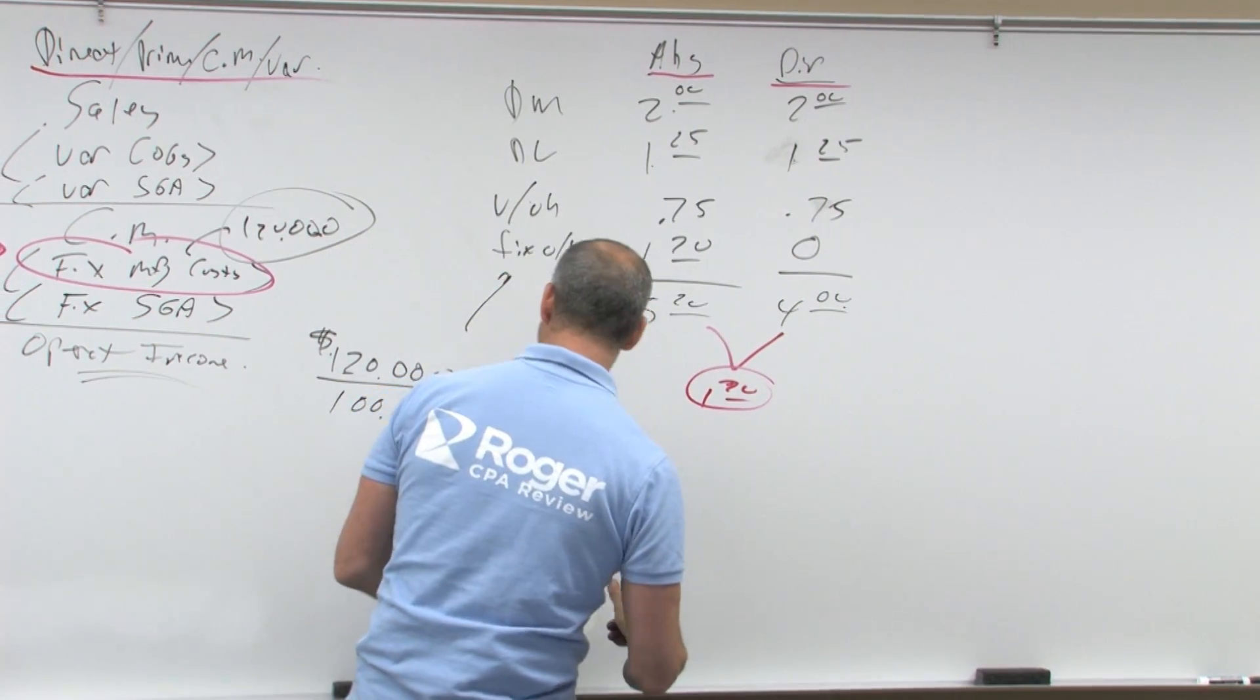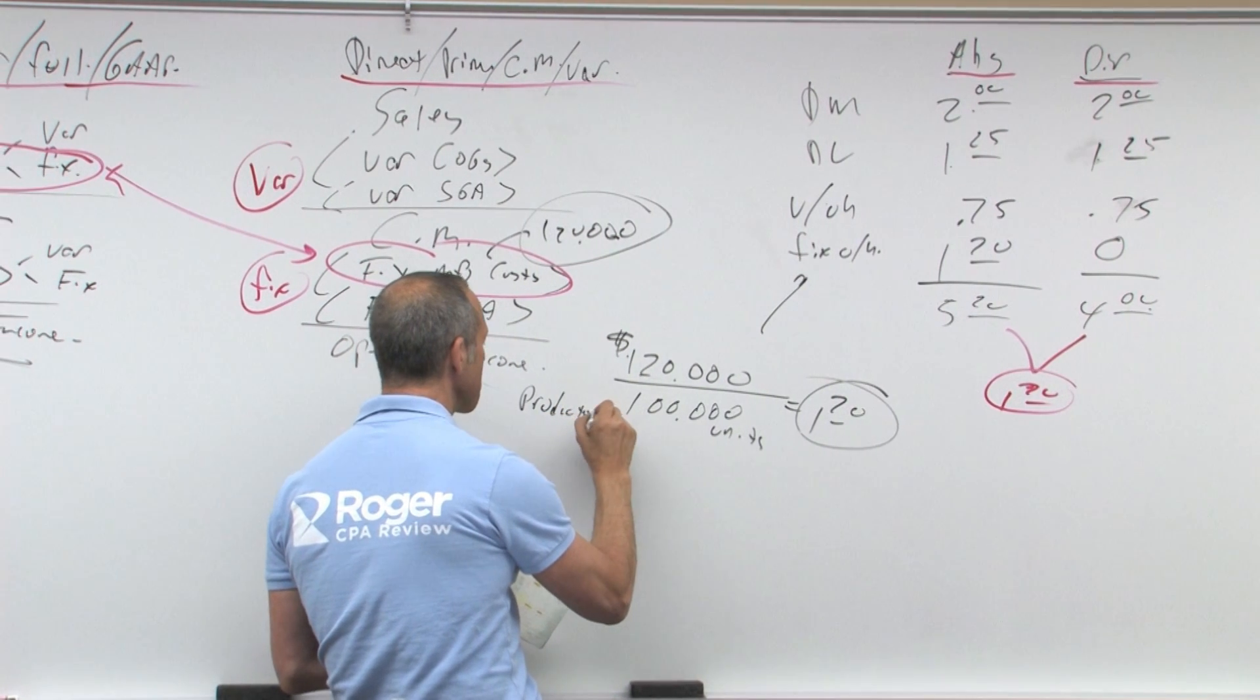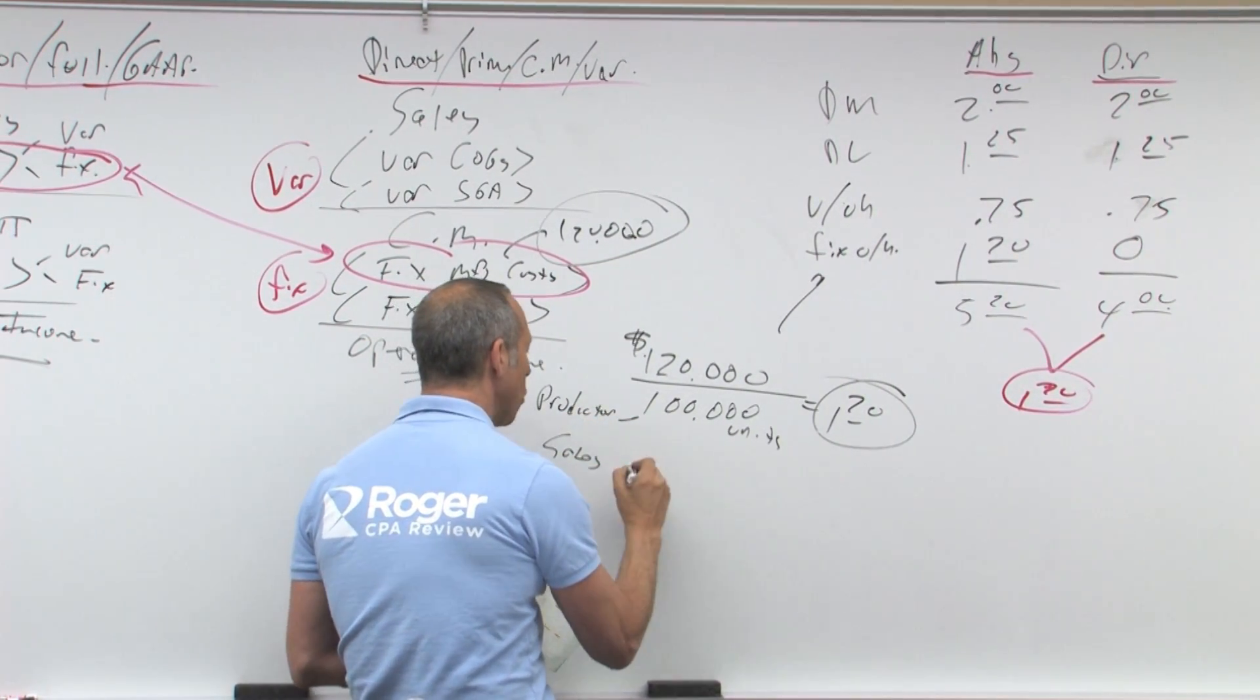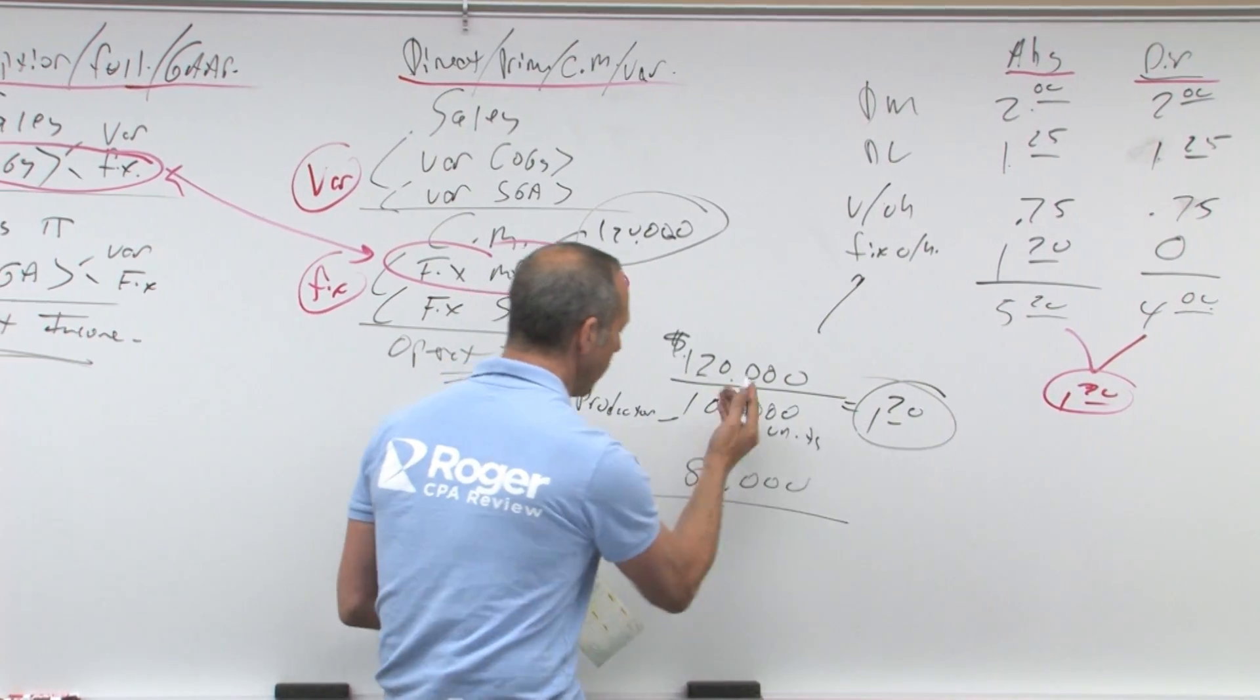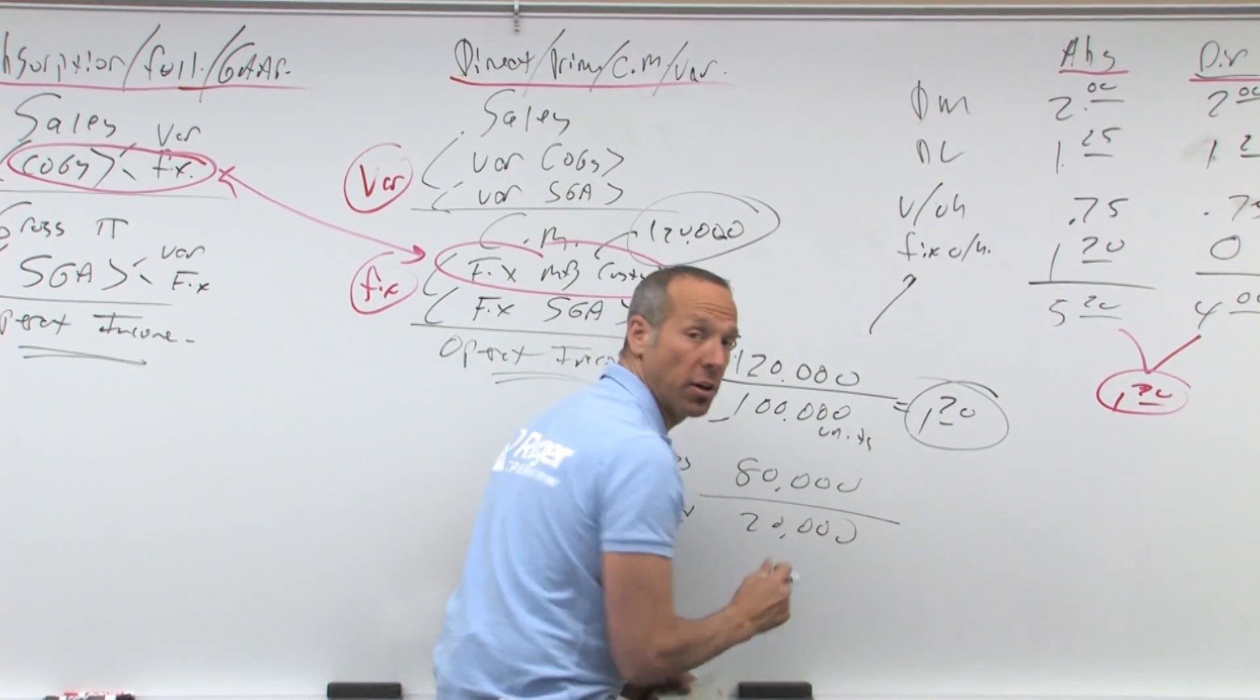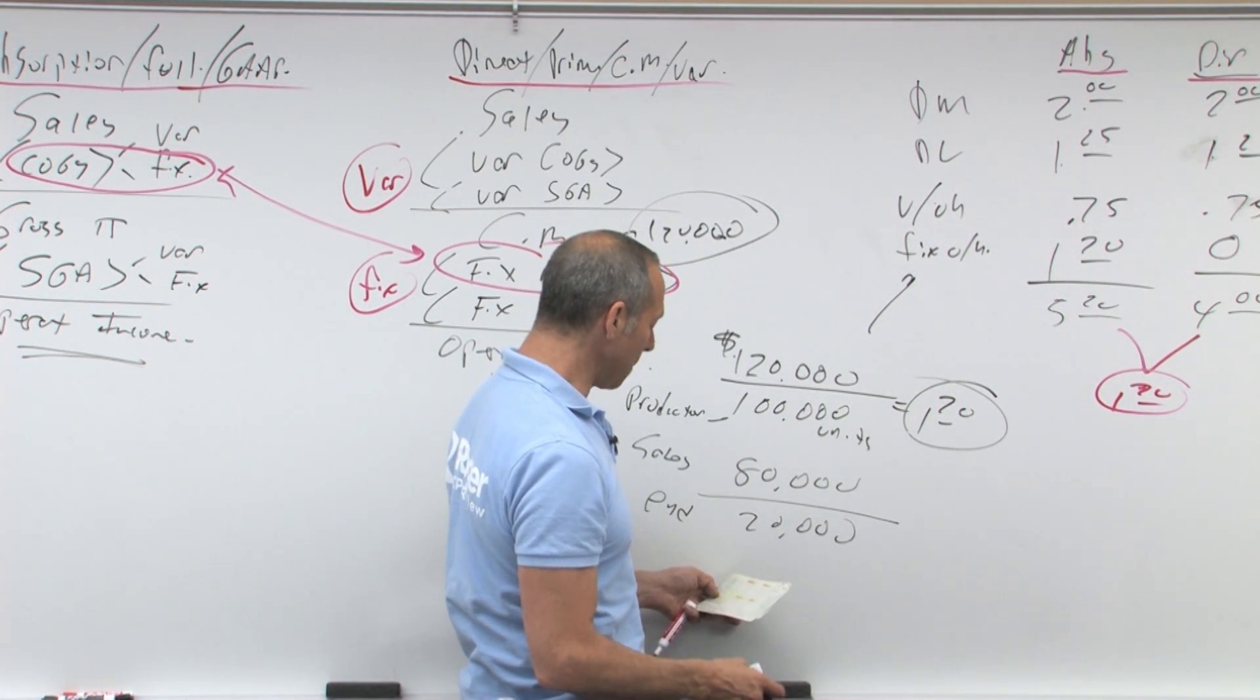Let's say for example, that my production was 100,000 units, but my sales were only 80,000 units. That means ending inventory is going to go up by 20,000 units. Everybody see that? So that's what's going to happen, ending inventory is going to go up.